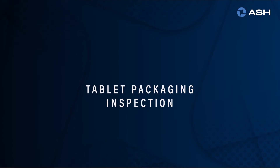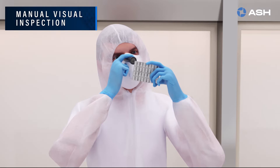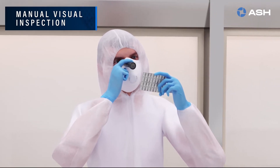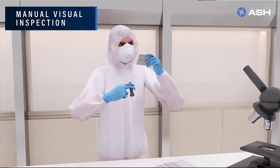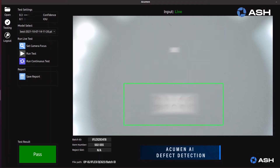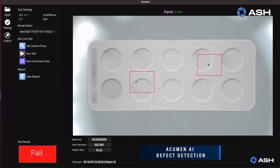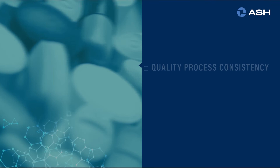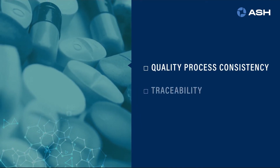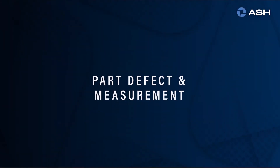The inspection of packaging integrity is crucial in ensuring product quality and stability. Manual inspection can be prone to operator subjectivity and is time consuming. The Acumen AI rapidly and consistently detects packaging integrity issues such as scratches, punctures and crimping of the foil, ensuring consistent rejection of compromised packaging defects, resulting in significantly higher outgoing quality.